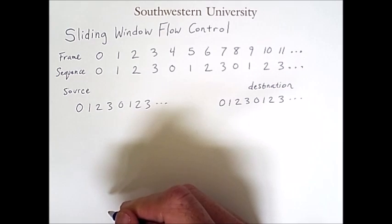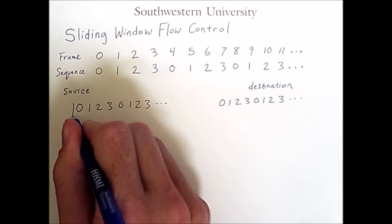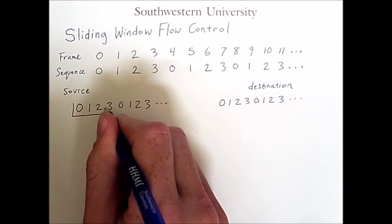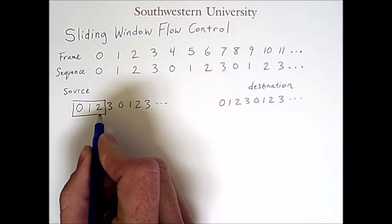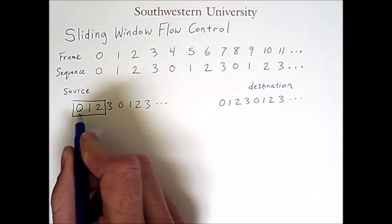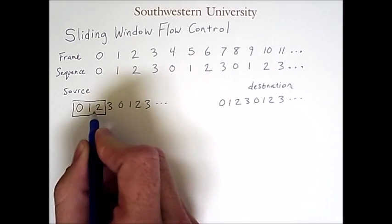Now here's where the sliding window comes in. We'll draw a box around the sequence numbers that are in the window. I mentioned that the window size would be 1 less than the total number of sequence numbers we could represent, so we go from 0 to 2. That's our window.